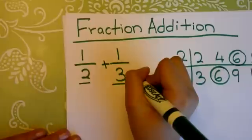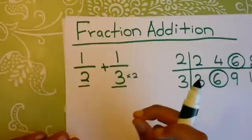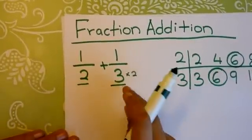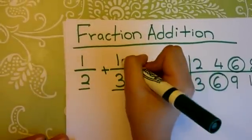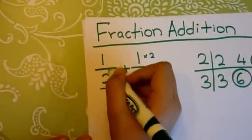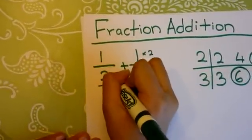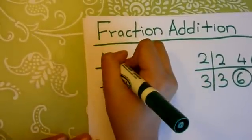3 times 2 is 6, so I'll multiply it by 2. And whatever I do to the denominator, I have to do to the numerator too. Now we'll move on to 1/2. 2 times 3 is 6, so I'll do that to the denominator and also to the numerator.